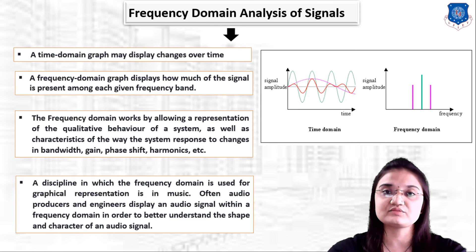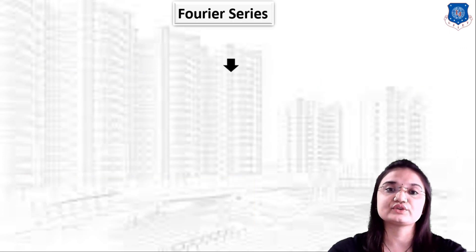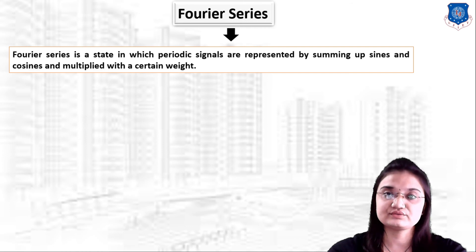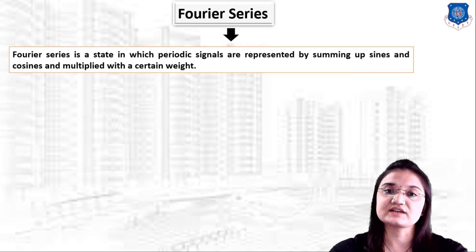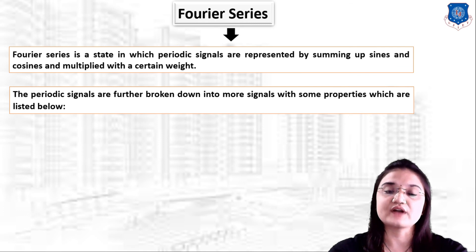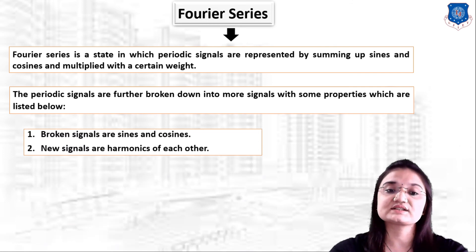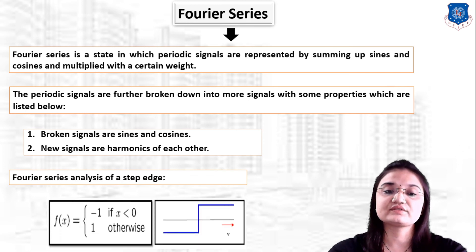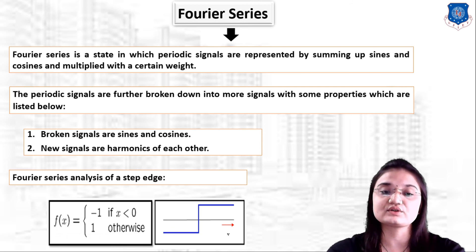Fourier series is a representation in which periodic signals are expressed by summing up sines and cosines multiplied by certain weights. Fourier series converts a periodic signal into the form of sines and cosines. Periodic signals are further broken down into more signals — the broken signals are sines or cosines, and the new signals are harmonics of each other. For example, a step-edge function has a value of minus 1 for x less than 0 and 1 otherwise.